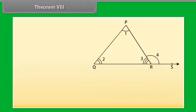Theorem 8. Do you remember about the exterior angle of a triangle? Look at this figure. Here, side QR is produced to point S. Angle PRS is called an exterior angle of triangle PQR.